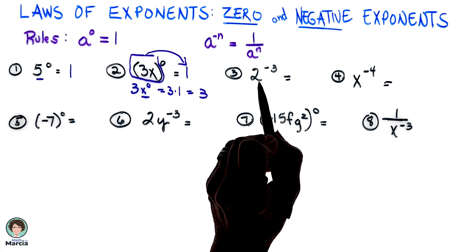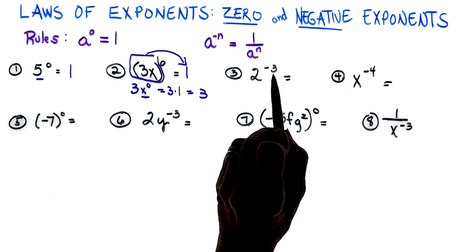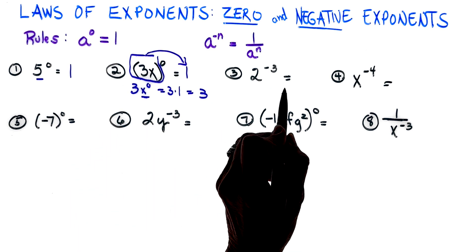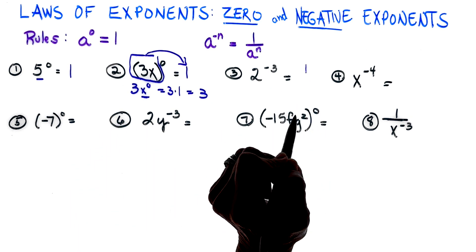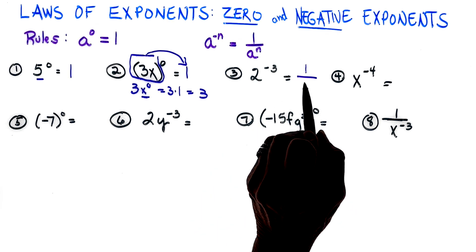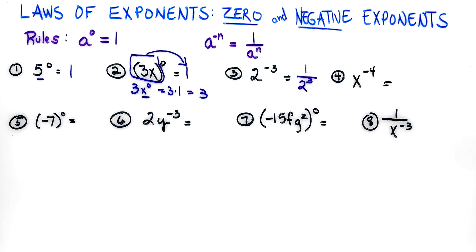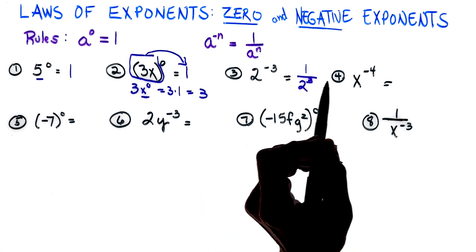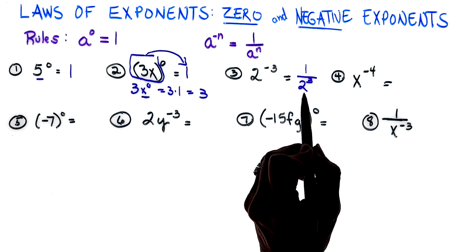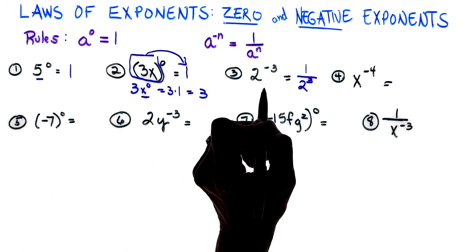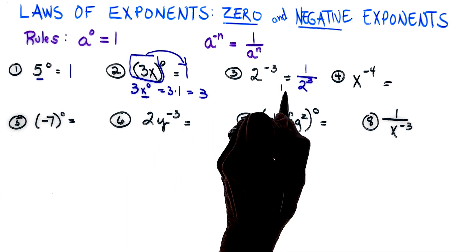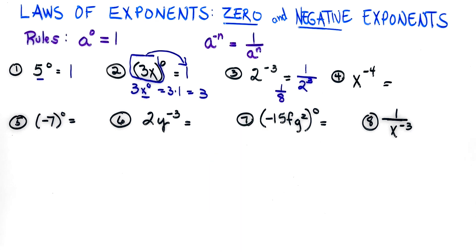All right, we have two, and notice we have a negative exponent. So all I have to do is write a one, and I'm going to put my two to the third power, or two cubed, on the bottom. I can actually simplify that because we know two cubed is two times two times two, so that in simplest terms is actually one-eighth.